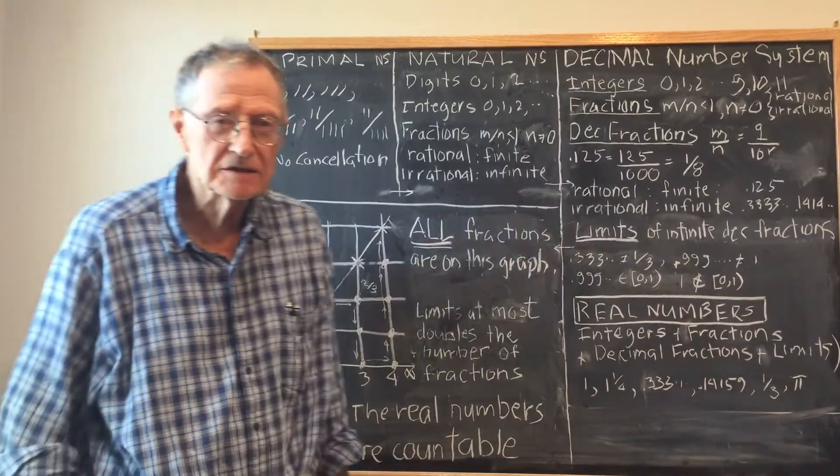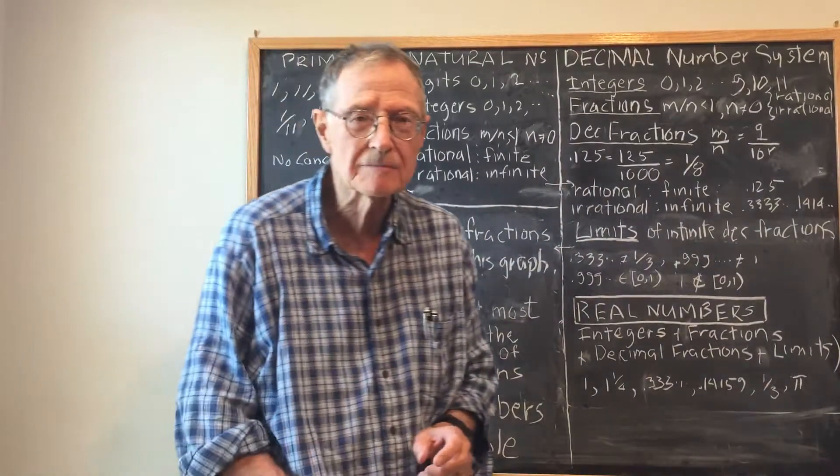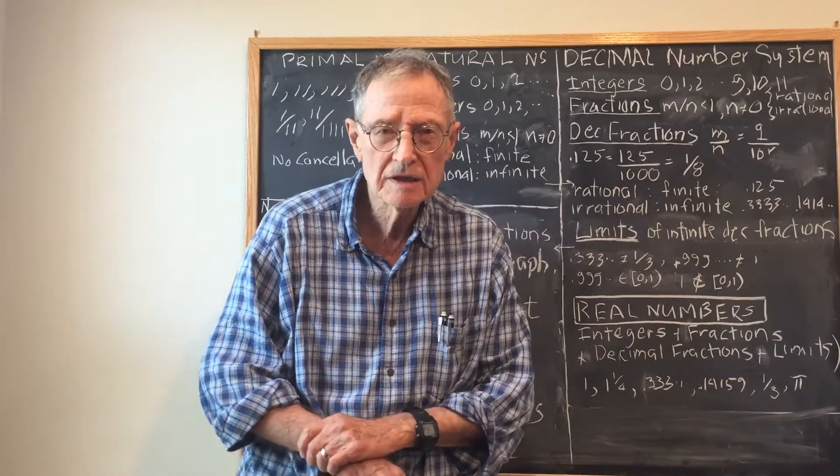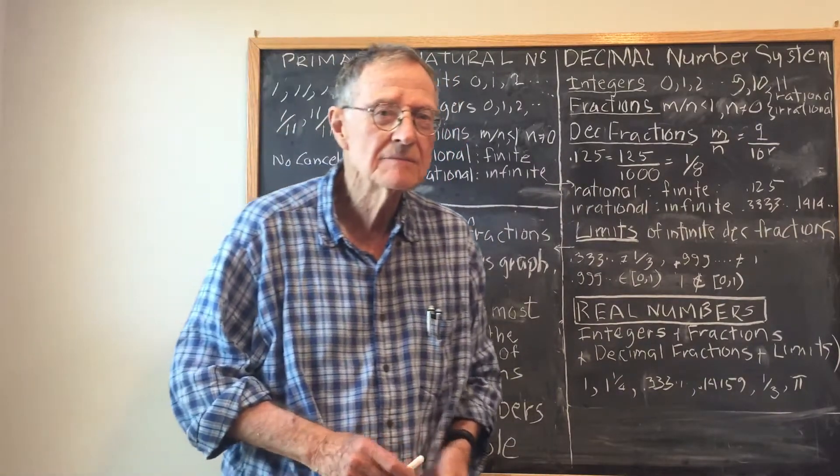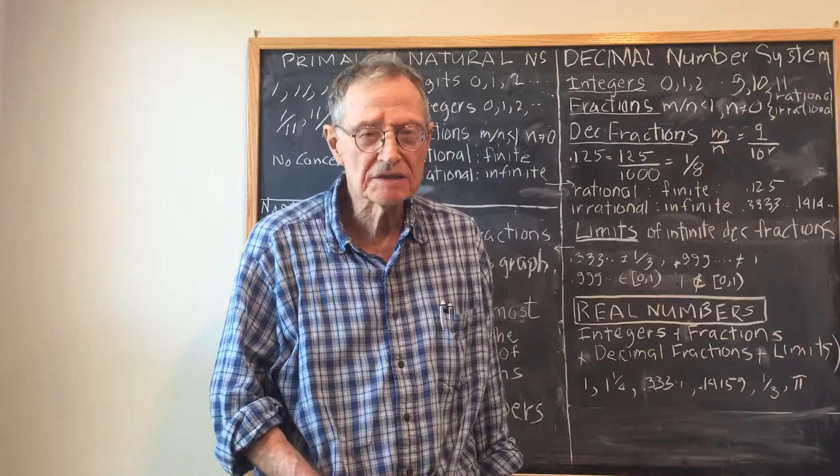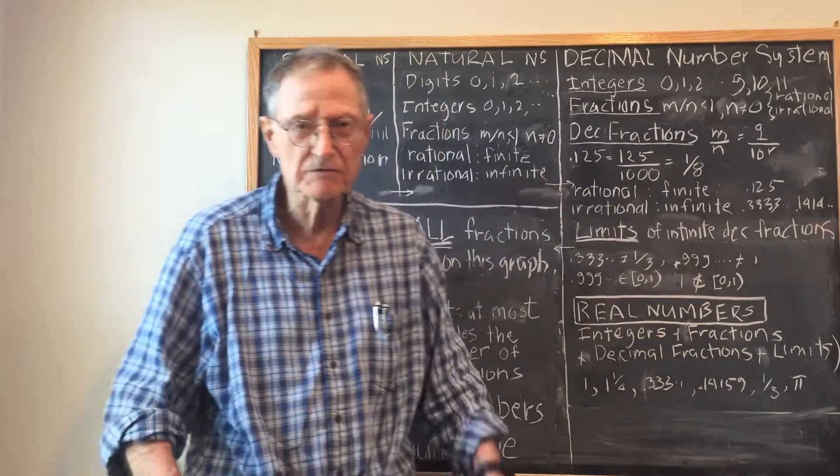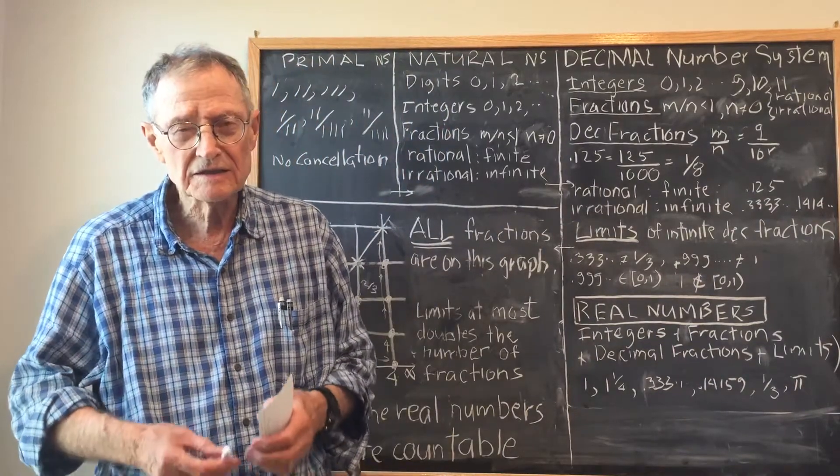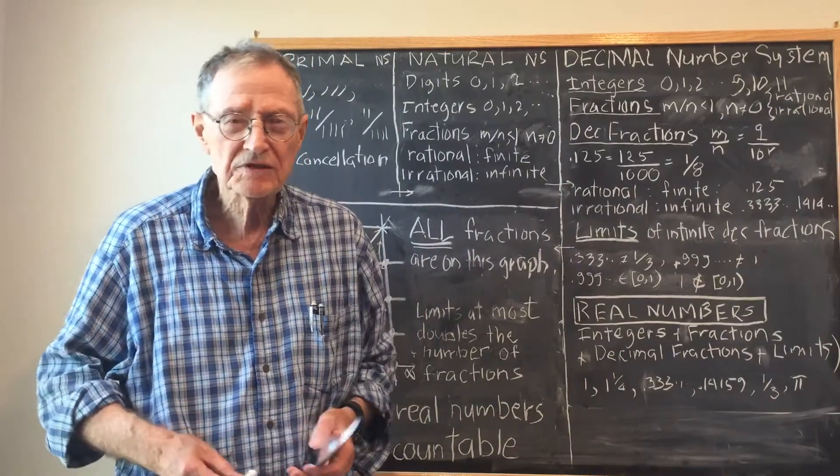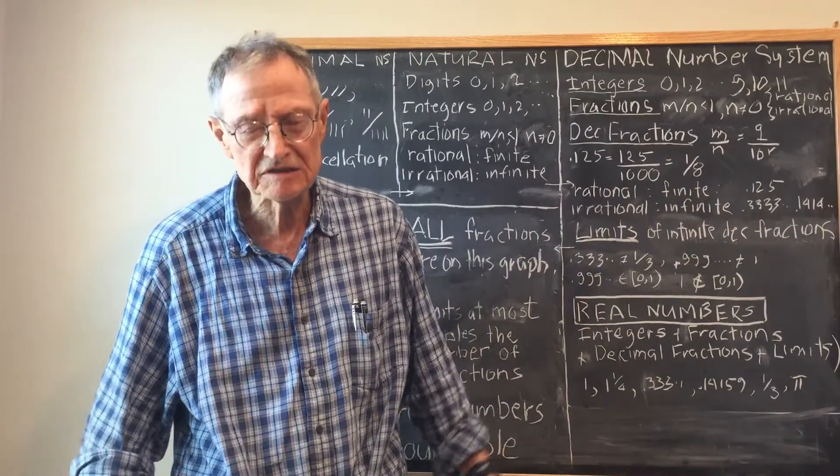Someone may object that there is a diagonal process which disproves countability. However, I'd like to point out that the diagonal process creates a number which is at the end of an infinite list, but an infinite list doesn't have a last number or an end, so that number doesn't exist. The diagonal process creates a number which is at the end of an endless list, which doesn't have an end, so the number doesn't exist. Thank you.